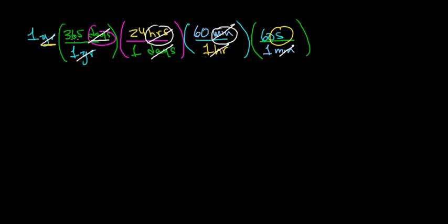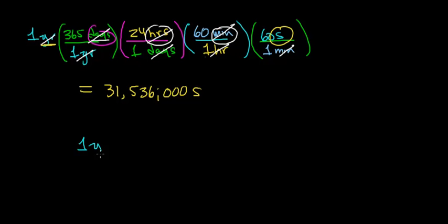All that remains is to multiply 365 by 24 by 60 by 60 to get the number of seconds in one year. When you multiply this out you get 31,536,000 seconds. In other words, one year equals 31,536,000 seconds.